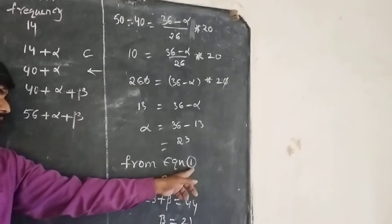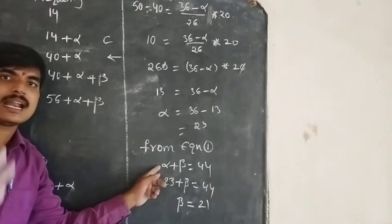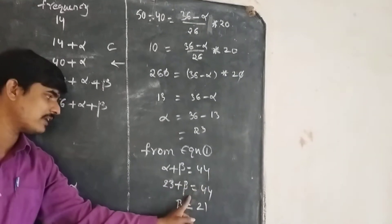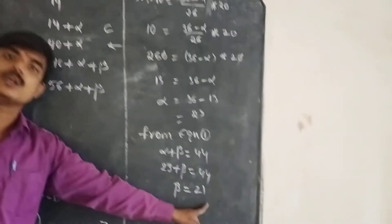We already know from equation one, alpha plus beta equals 44. We have alpha equals 23, so we get beta equals 21.